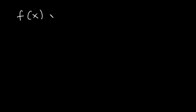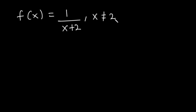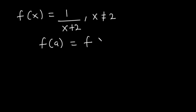Let's solve some examples. How do we prove that the function f(x) = 1/(x+2), where x ≠ 2, is one-to-one? To solve this problem, we need to equate f(A) to f(B).